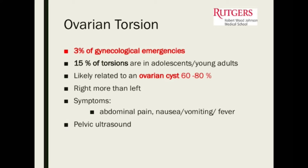Oftentimes the symptoms of a torsion are acute — sudden onset of pelvic or abdominal pain, and usually something triggered it. Maybe they had recently been sexually active, or some activity triggered the ovary to twist. We've seen a lot of patients in gymnastics who are flipping, that ovary is twisting, and horseback riders — we get them all the time.